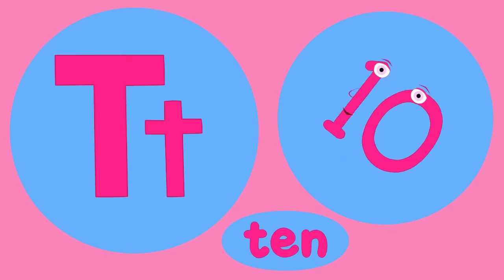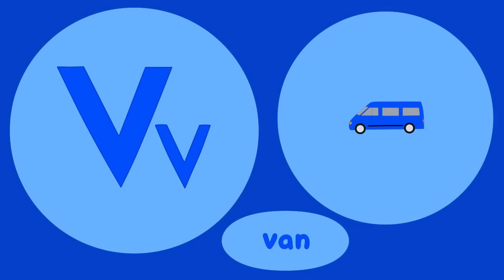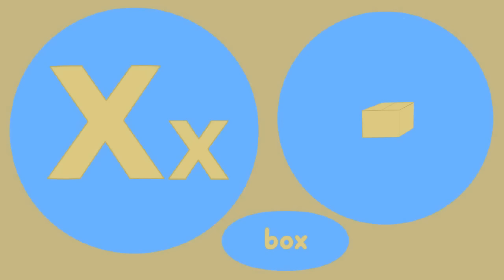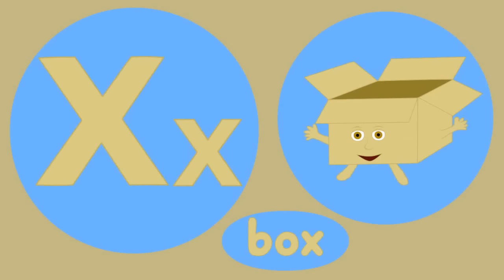T is for ten, t-t-ten. U is for umbrella, u-u-umbrella. V is for van, v-v-van. W is for watch, w-w-watch. X is for box, x-x-box.